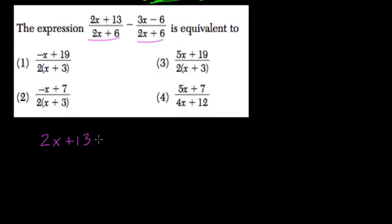2x plus 13 minus 3x, and minus negative 6, so plus 6, all over 2x plus 6. So 2x minus 3x, that's minus x, 13 and 6, that's 19, over 2x plus 6.